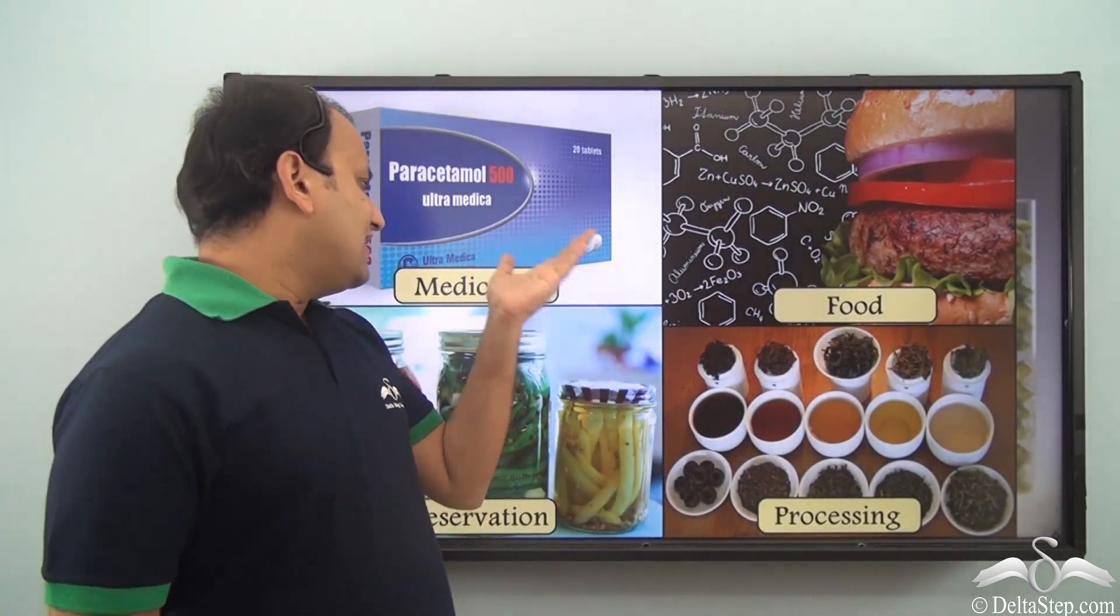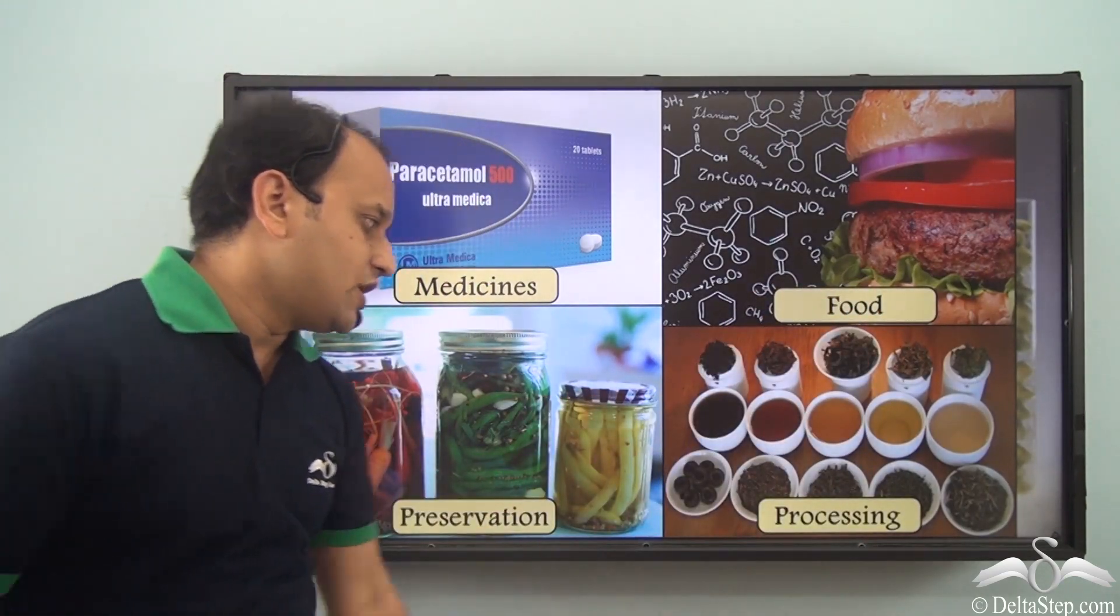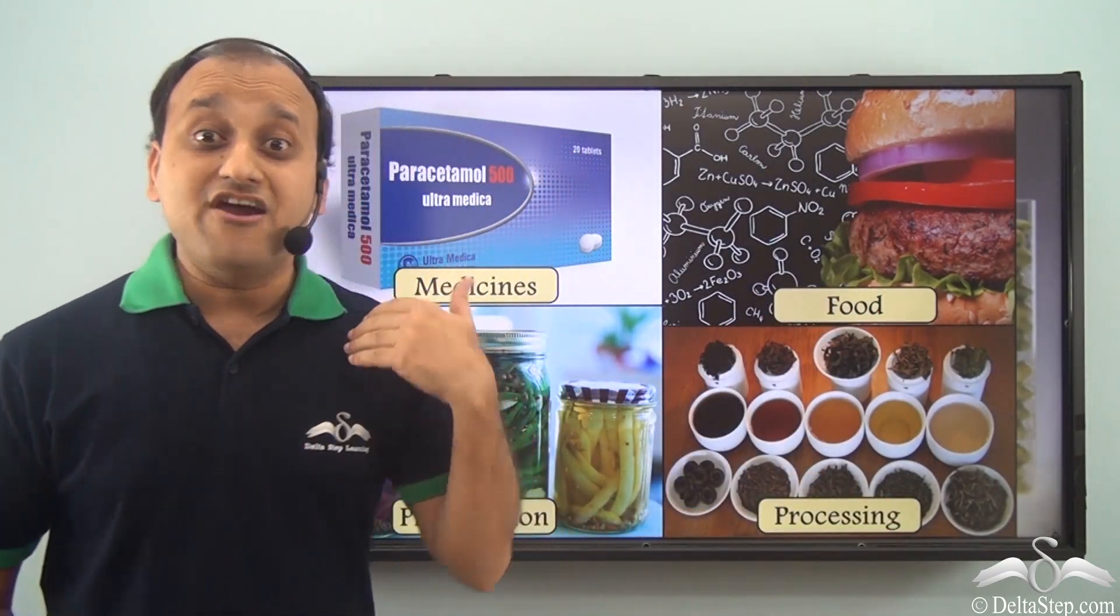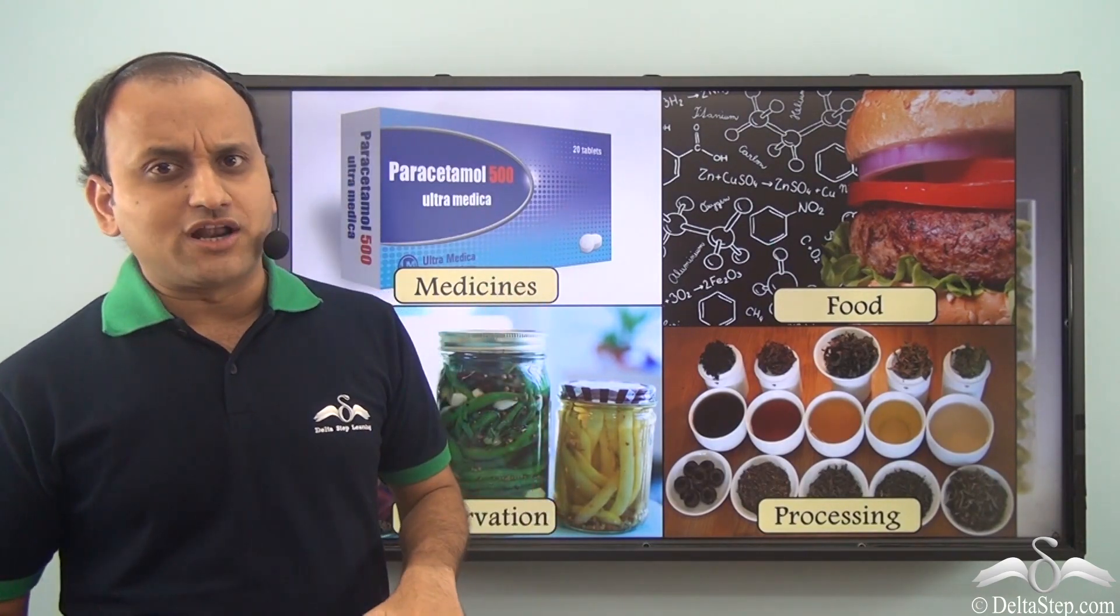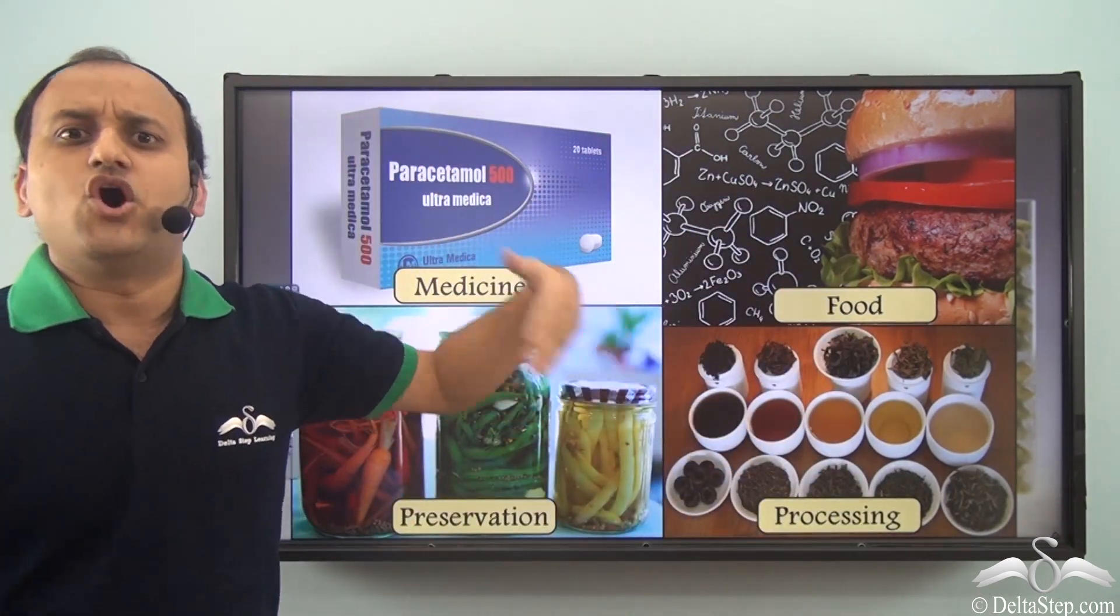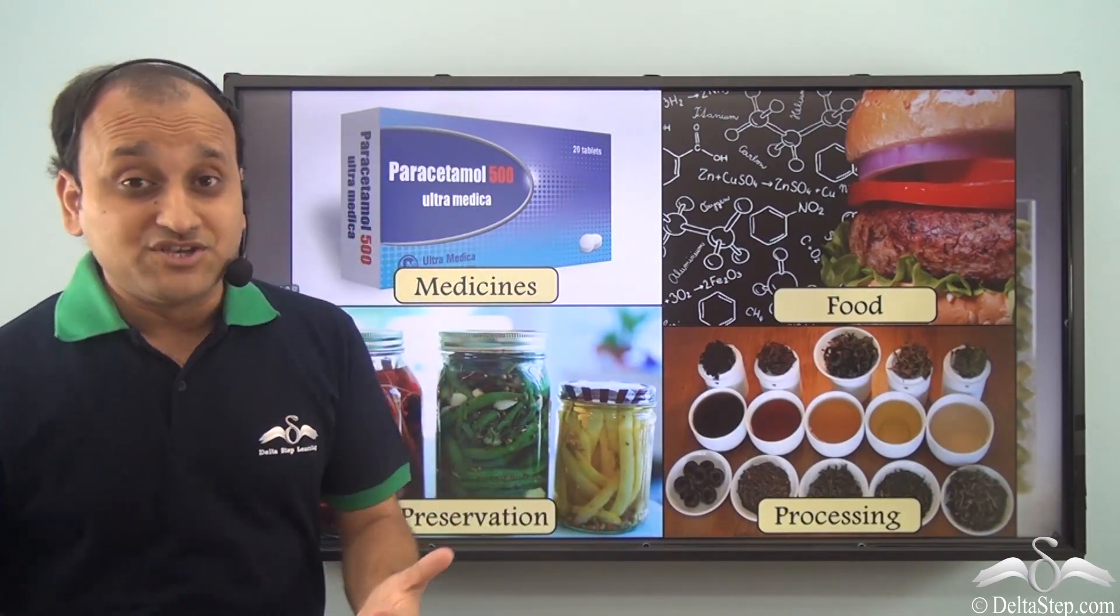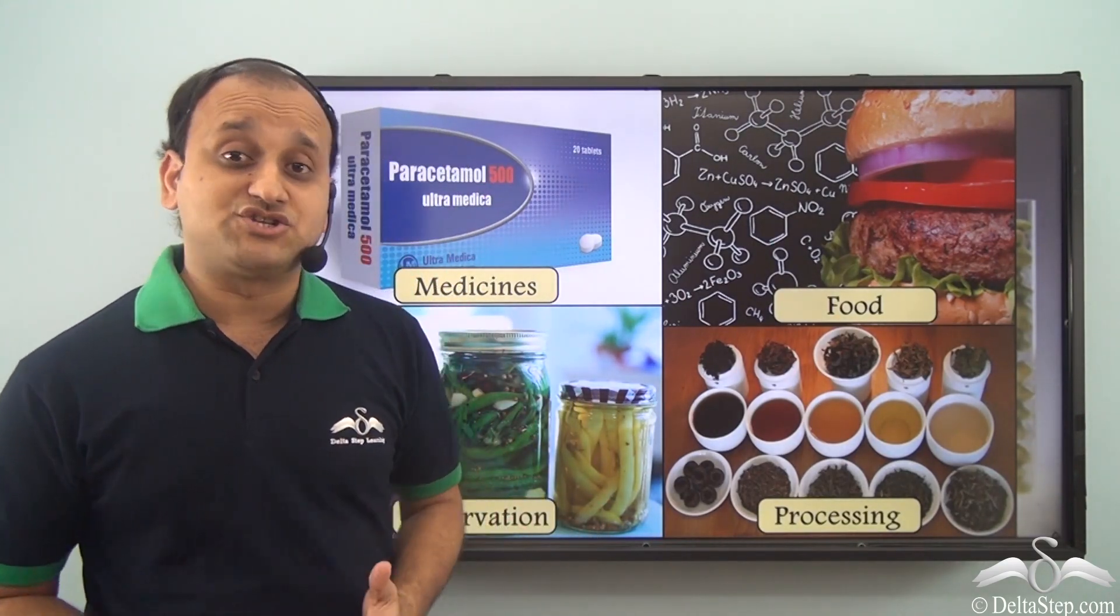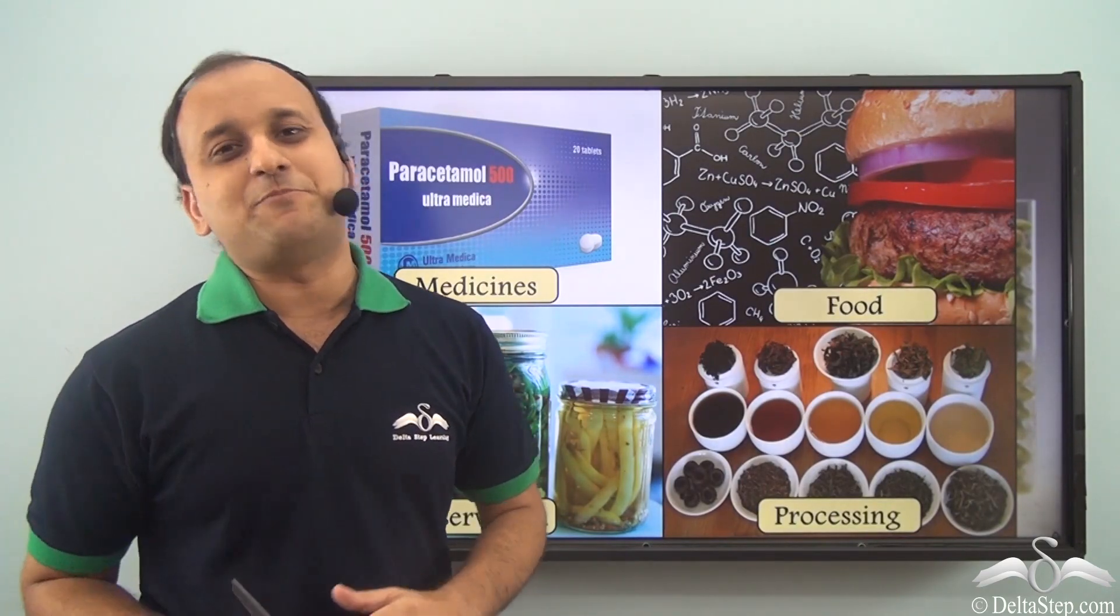So whether it is medicines, food, preservation or processing, everywhere we have chemistry. So without the knowledge of chemistry you cannot perform any of these activities or you cannot get any of these products. So chemistry is a very important branch of science, and without its knowledge our existence will not be possible at all.